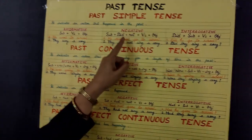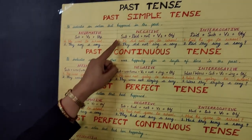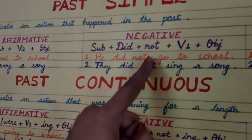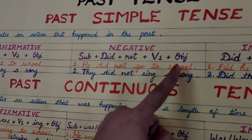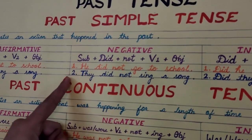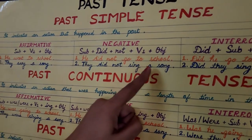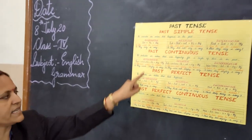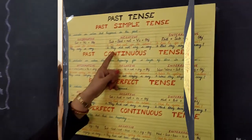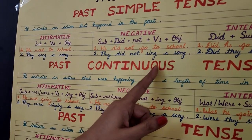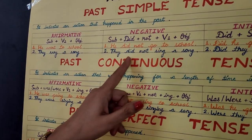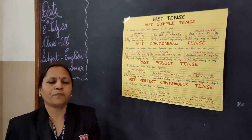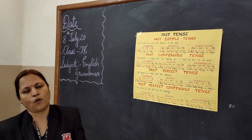Now let's move towards the negative sentence. Here you can see the structure: subject plus did plus not plus verb one plus object. For example: He did not go to school. They did not sing a song. Here he and they are the subject. You have to put not after did for making a negative sentence. One thing to keep in mind: after putting did, you have to take the first form of the verb.